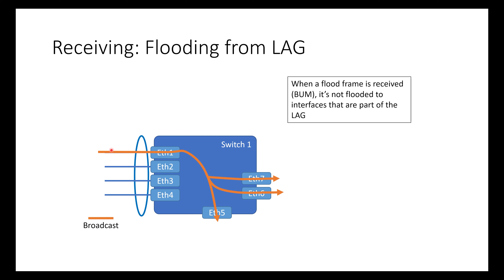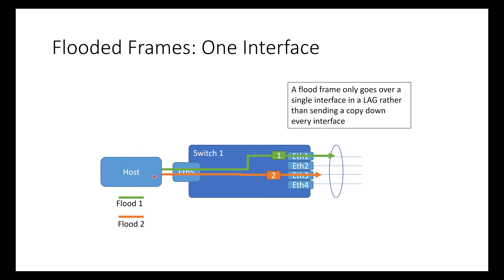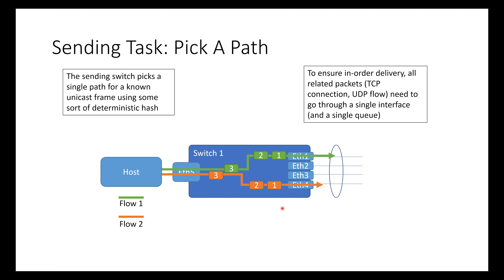When a flood frame comes in off the LAG, we flood it out all other interfaces but it doesn't go back into the LAG — preventing broadcast storms. When sending a flood, we use a deterministic method to pick which one interface to send it over — not all four at the same time, just one. So here we've got two different flood frames — one goes up ethernet one, one goes down ethernet three. No problem.